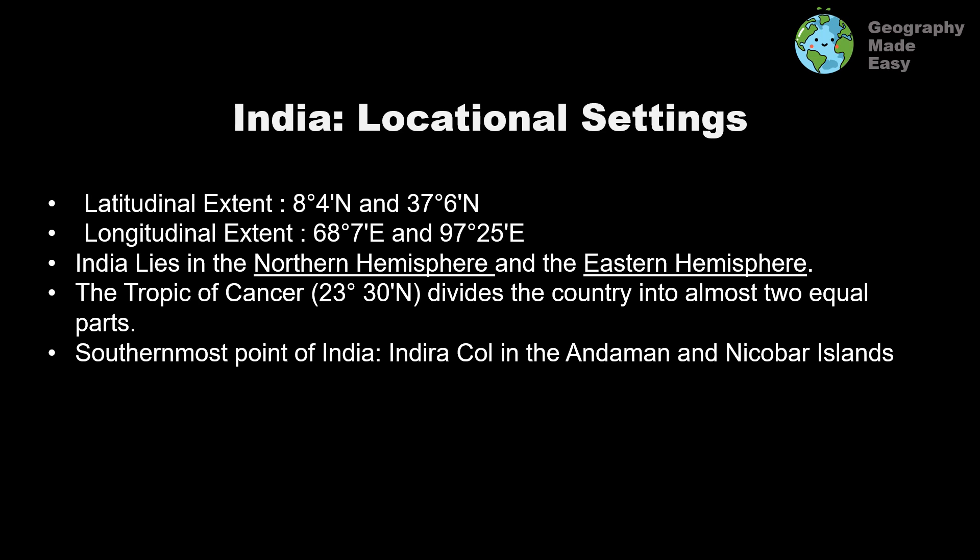Similarly, a longitude divides the Earth into two equal parts. This longitude is the Greenwich line or the prime meridian. Countries lying east of the prime meridian, which passes through Greenwich in the UK, fall in the Eastern Hemisphere, and countries lying to the west fall in the Western Hemisphere. Essentially, Japan is in the Eastern Hemisphere and the US is in the Western Hemisphere. Similarly, India, Bangladesh, and all neighboring countries in the Southeast Asian region lie in the Eastern Hemisphere.